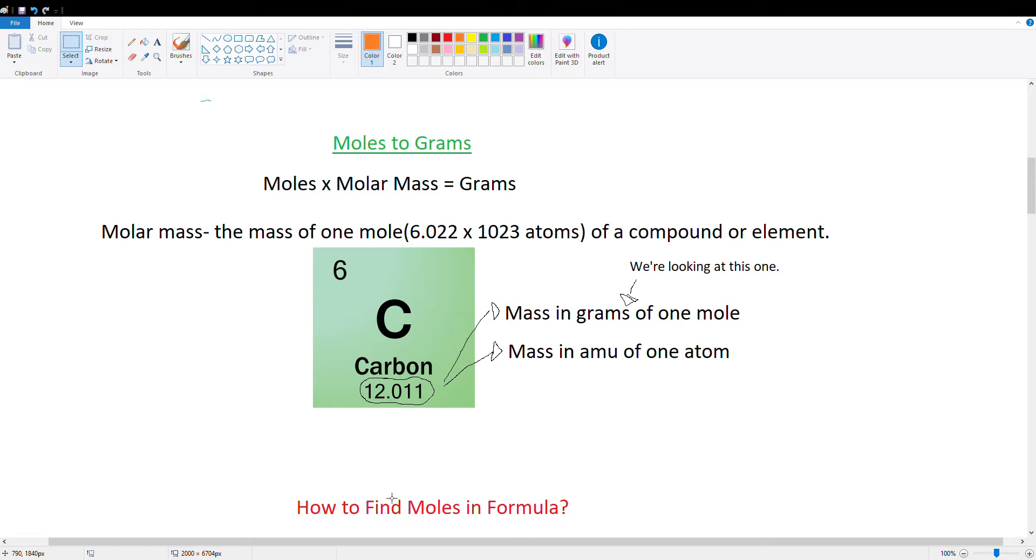And the molar mass is the mass of one mole of a compound or element. So if we look over here at this little snippet of a periodic table, we can see that this right here, that is a molar mass of carbon. So that's what we're going to be using.